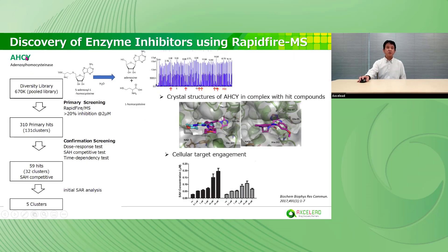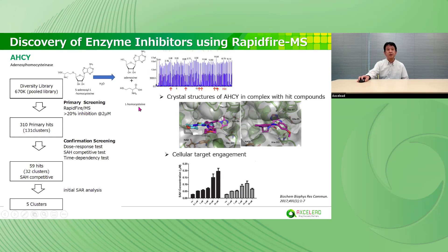This slide shows the discovery of enzyme inhibitors using RapidFire-MS. HCY is an enzyme that produces adenosine and L-homocysteine using S-adenosylhomocysteine as a substrate. We constructed an assay system to detect adenosine and L-homocysteine simultaneously. We performed primary screening using a diversity library, and finally obtained 59 hit compounds in the HTS campaign.